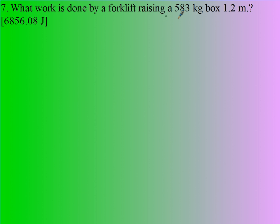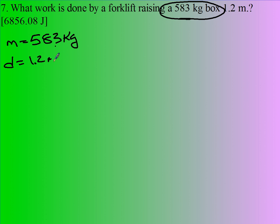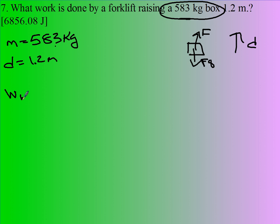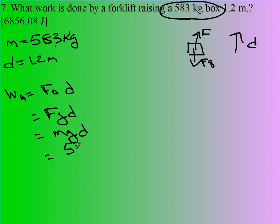What work is done by a forklift raising a 583 kilogram box 1.2 meters? The mass is 583 kilograms — this time I'm given the mass, not the weight — and D is 1.2 meters. Fg goes down and the applied force goes up, with displacement upward. I always assume it's going at constant speed, so F equals Fg. The work applied equals the force applied times D, and the force applied equals the weight, which is Fg equals mg: 583 kilograms times 9.8.